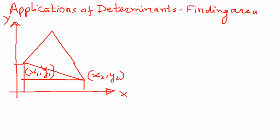And then this point here is x3, y3. If a triangle has three corners with coordinate points x1, y1, x2, y2, and x3, y3 as shown here, then we can use determinants to find the area.